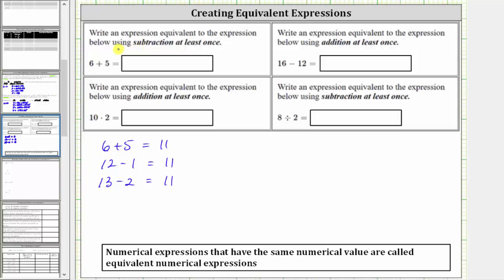Notice how the directions say use subtraction at least once, so while either of these expressions would work, we can also create an equivalent expression using subtraction more than once. For example, 15 minus two minus two is also equal to 11. So 12 minus one, 13 minus two, or 15 minus two minus two are all equivalent to six plus five. Let's go ahead and just use 13 minus two. There are an infinite number of expressions that use subtraction at least once that are equivalent to six plus five.